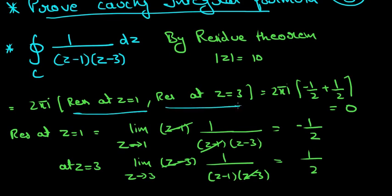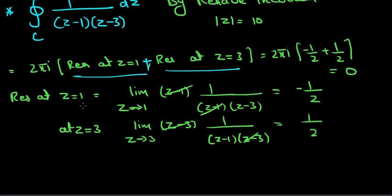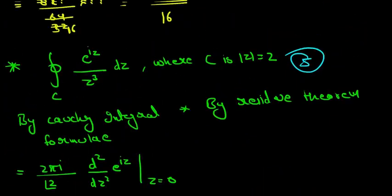Using residue theorem, we calculate the residue at 1 and residue at z equal to 3 and sum them. Residue at 1 is limit z approaches 1, z minus 1 multiplied by the function, so we get 1 upon z minus 3. z minus 1 and z minus 1 cancel each other. As z approaches 1, we put z equal to 1 and get minus 1 upon 2, because 1 minus 3 is minus 2. z equal to 3 gives us 1 by 2, and the answer is 0 because the sum is 0.